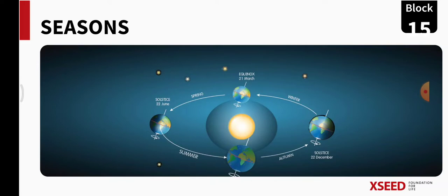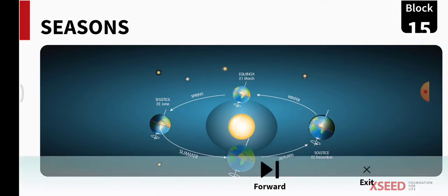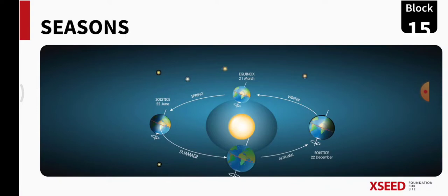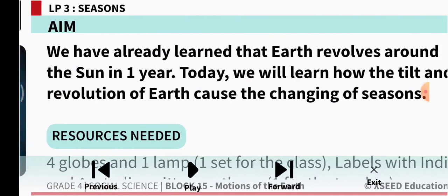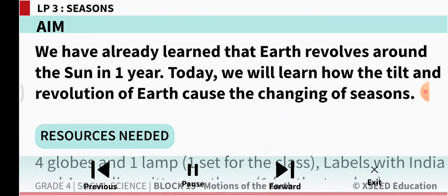On the screen you can see the earth in various positions revolving around the sun. We have already learnt that earth revolves around the sun in one year. For one revolution the earth takes 365 days. Today we will learn how the tilt and revolution of earth cause the changing seasons.